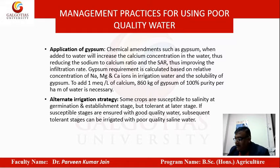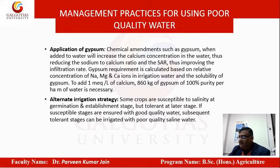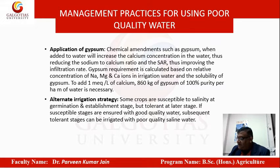The alternate irrigation strategy: some crops are suitable to salinity at germination and establishment stage but tolerant at later stages. If susceptible stages are ensured with good quality water, subsequently you can go for irrigation with poor quality water. Once they become bigger and can tolerate salty water, you can use that kind of water without affecting the crop or the cost of production.